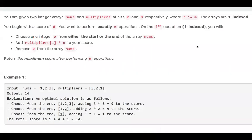We are given two integer arrays, nums and multipliers, of size n and m. We begin with a score of zero, and we want to perform exactly m operations. We have to use up all the numbers in multiplier.